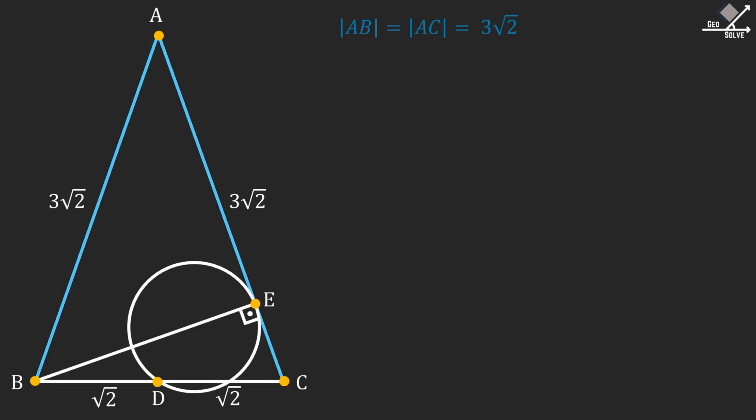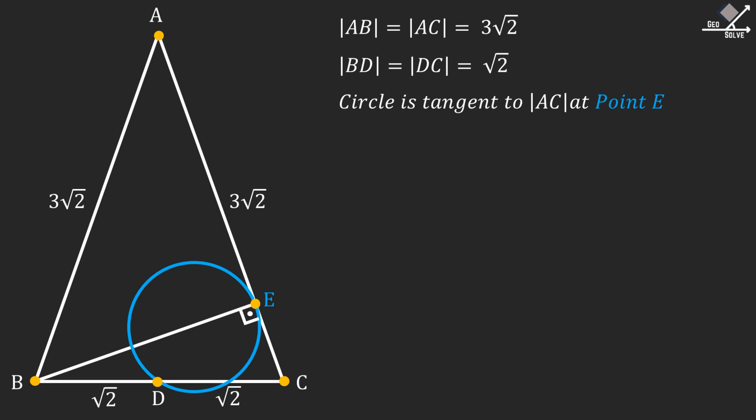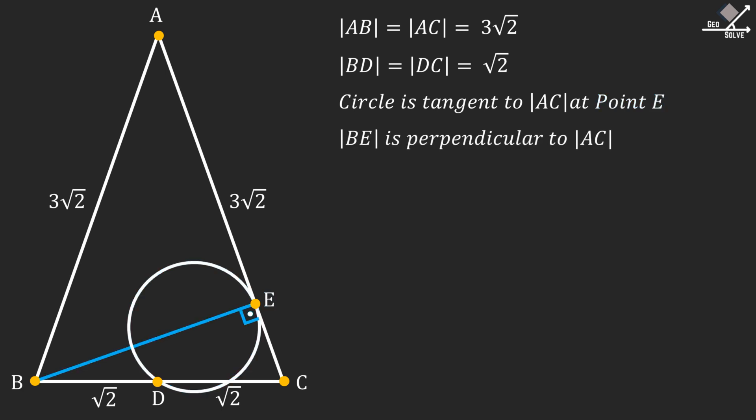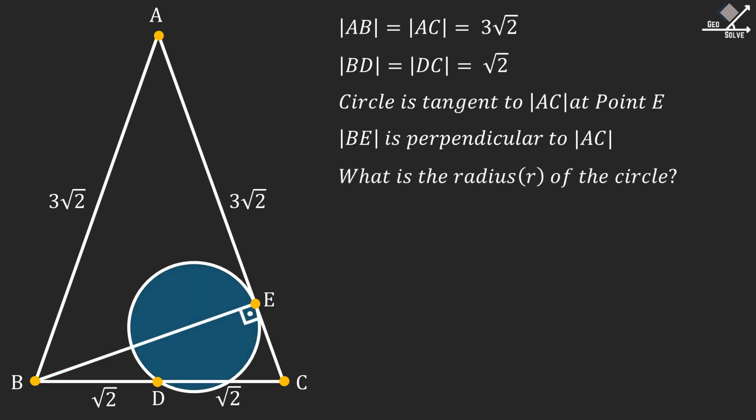ABC is an isosceles triangle with two equal sides of length 3 times square root of 2. Line segment BC is divided into two equal pieces of length square root of 2 by point D. The circle is tangent to the line segment AC at point E. Line segment BE is perpendicular to line segment AC. And we are asked the radius of the circle.